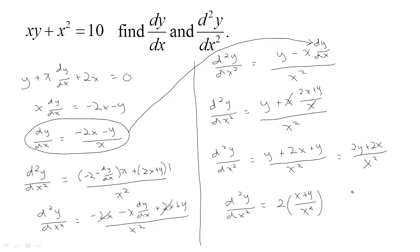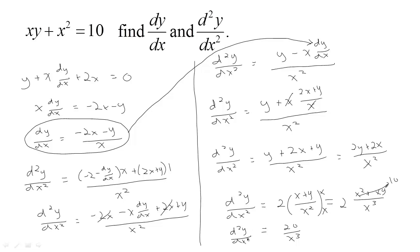We have one more trick to simplify further. If we multiply 2(x + y)/x² by x/x, we get 2(x² + xy) / x³. Because of the original equation, we know x² + xy = 10. So the second derivative simplifies to 2 times 10 over x cubed, which is 20/x³. By multiplying top and bottom by x, we were able to create the original equation x² + xy and substitute 10, giving us this clean final form.